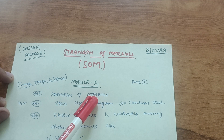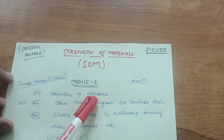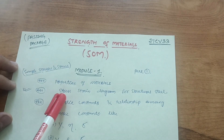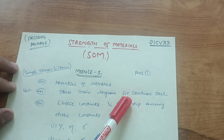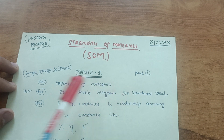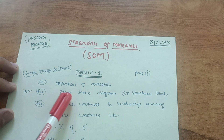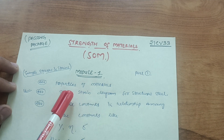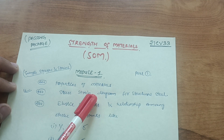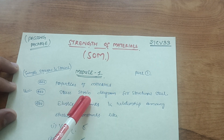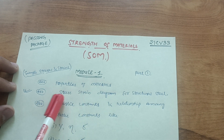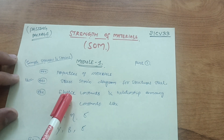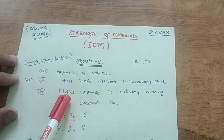The next important question is the stress-strain diagram for structural steel. You have to draw the stress-strain diagram — also called the stress-strain graph. From this particular diagram you can also go through Hooke's Law.